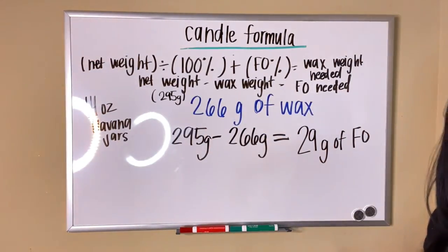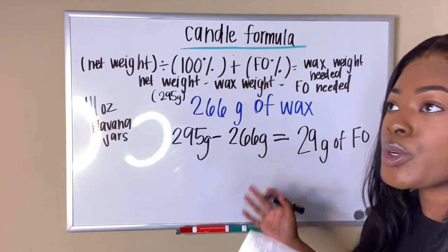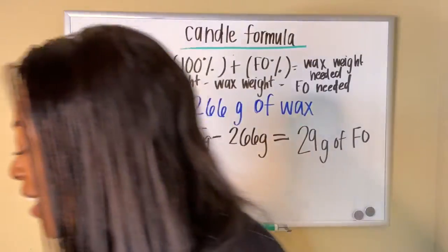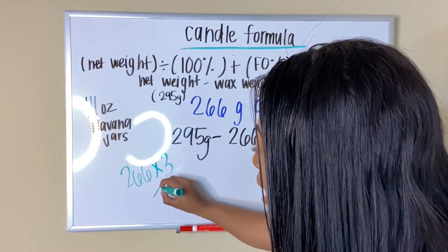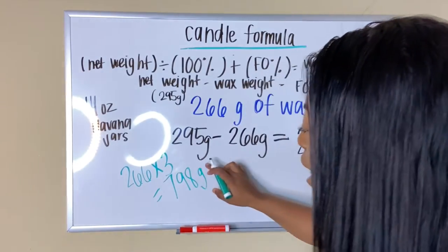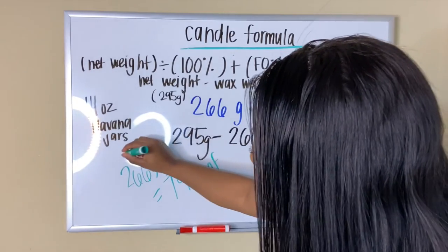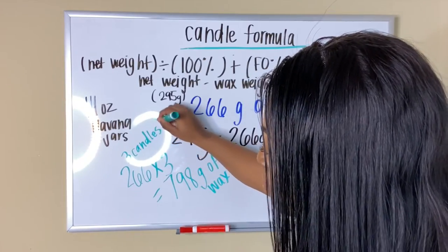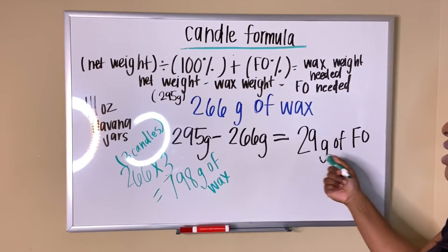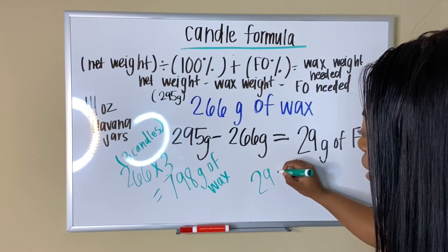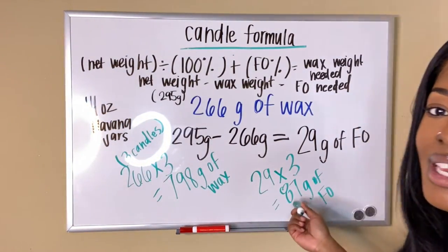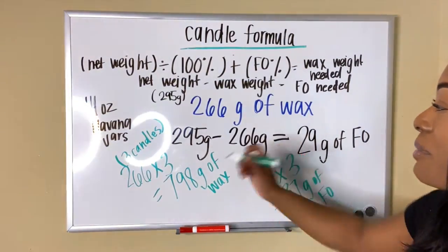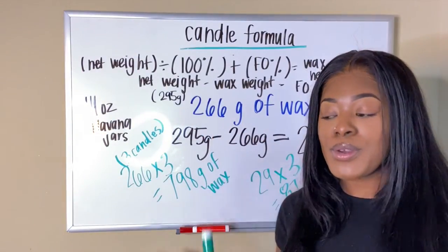If you're doing multiple candles, scaling up is the easiest step. Say you're making three candles — take 266 grams of wax times three, which gives you 798 grams of wax total. For the fragrance oil, take your 29 grams times three, which gives you 87 grams of fragrance oil. That's everything you need to make three candles. Sorry if I'm writing sideways — it's a little hard to write and stay in view of the camera.